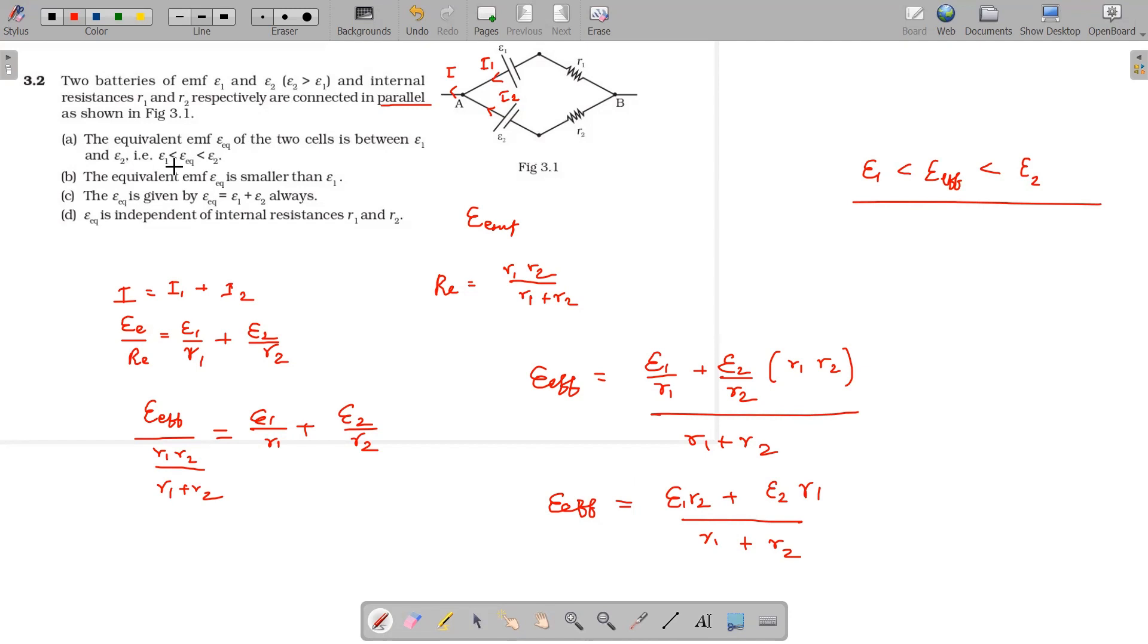The equivalent EMF of two cells is equal to e1 and e2 - less than e_effective but it is greater than, it is less than e2 and greater than e1. That's the answer.